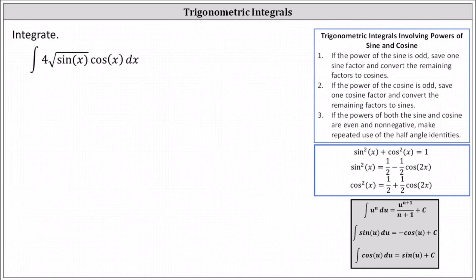Let's first replace the square root with the rational exponent of 1 half. The given integral equals the integral of 4 times sine x raised to the power of 1 half times cosine x dx.